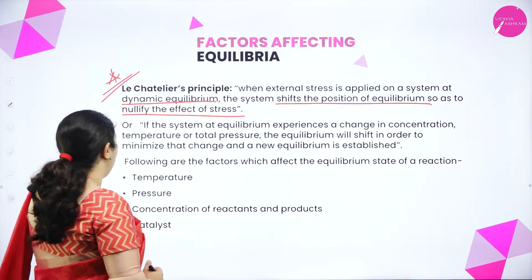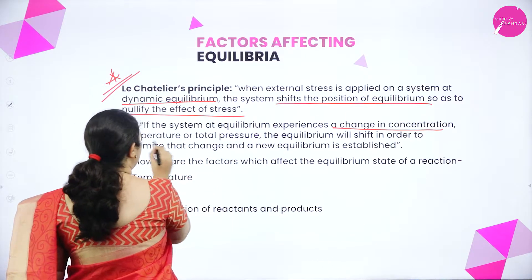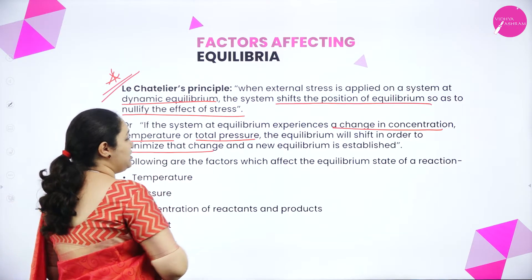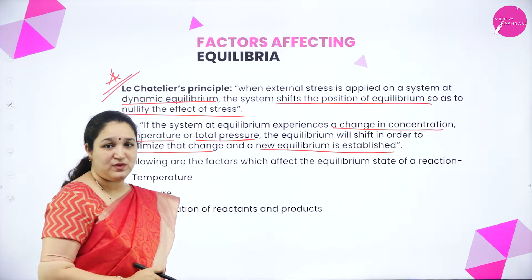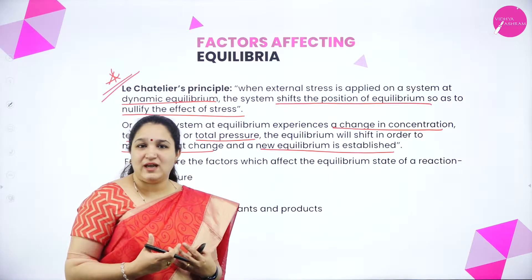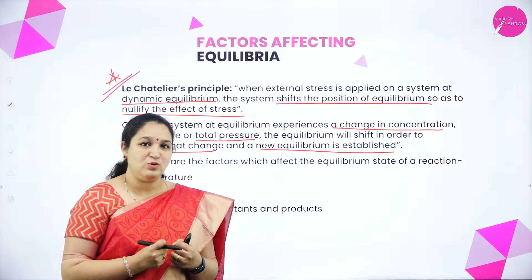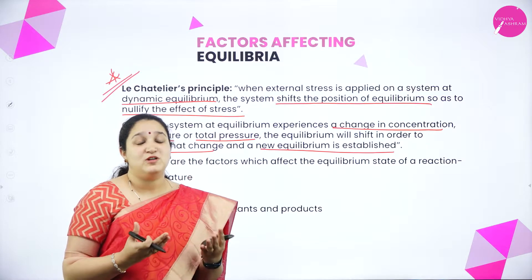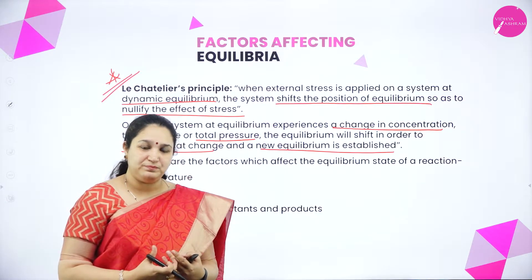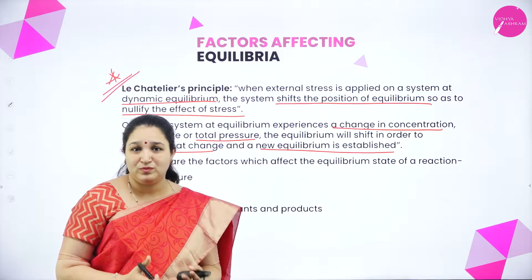There is one more way of putting Le Chatelier's principle: if the system at equilibrium experiences a change in concentration, temperature or total pressure, the equilibrium will shift in order to minimize that change and a new equilibrium is established. It is just like us — we have a routine and suddenly there is a change happening. We will take some time to come back to normal. Same way, the system at equilibrium will want to nullify the effect of the stress applied. The factors which can disturb equilibrium are temperature, pressure, and concentration of reactants or products.